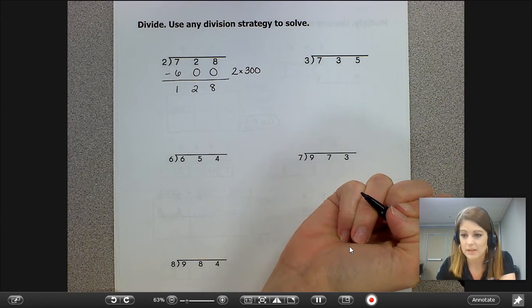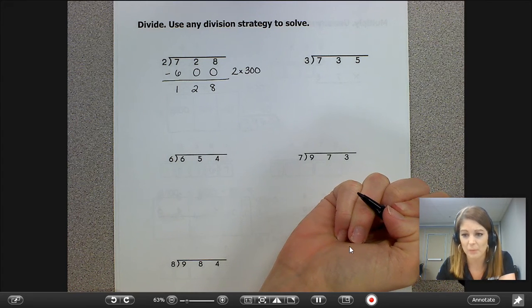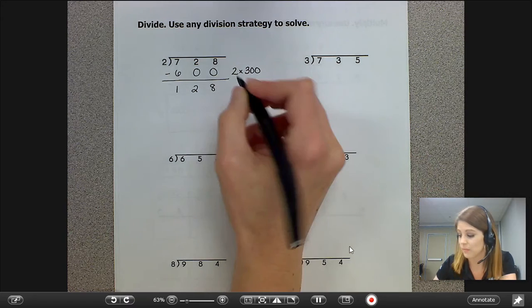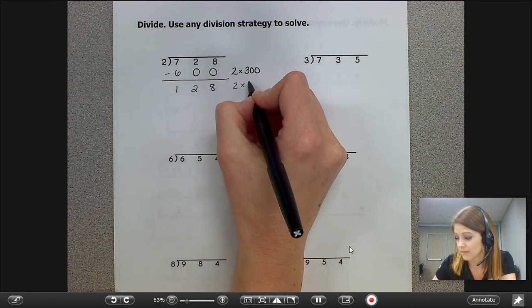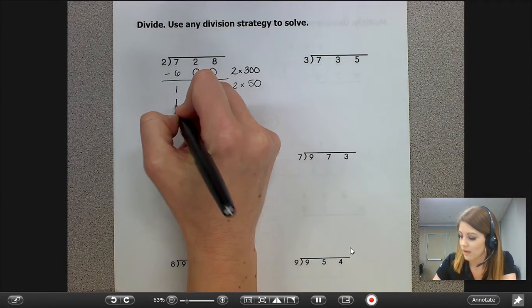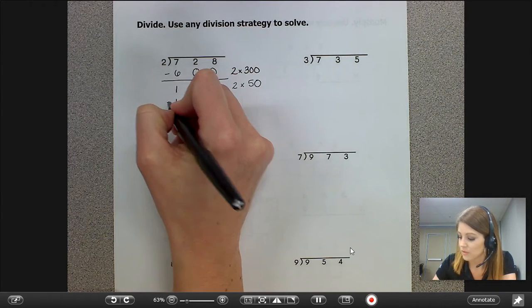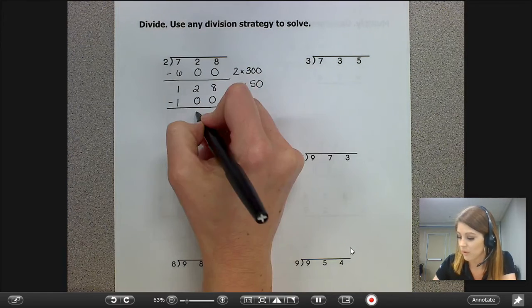Again, I'm going to think to myself, what multiplication problem could I use to help me solve this? Well, I know that two groups of 50 is 100, and if I subtract those two numbers, 28.